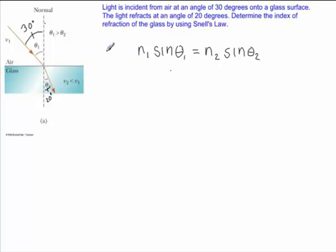So the first region, region 1, is air, and air has an index of refraction of 1. And then the angle of incidence is 30 degrees.